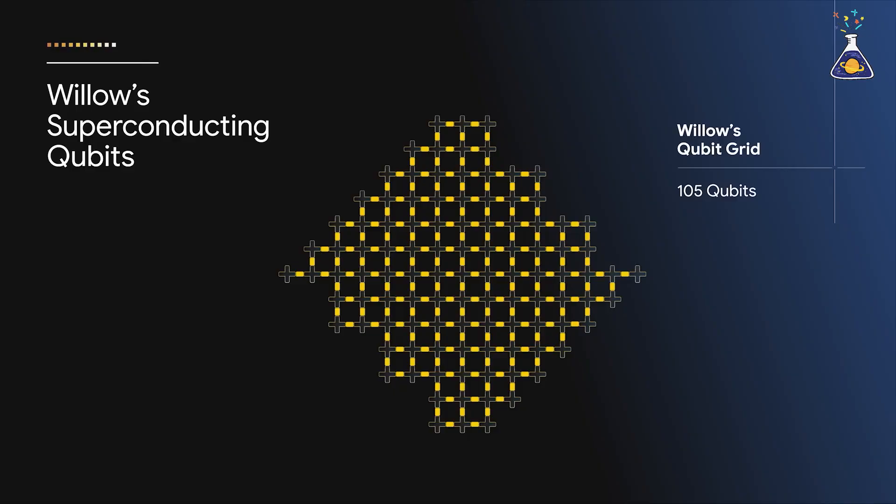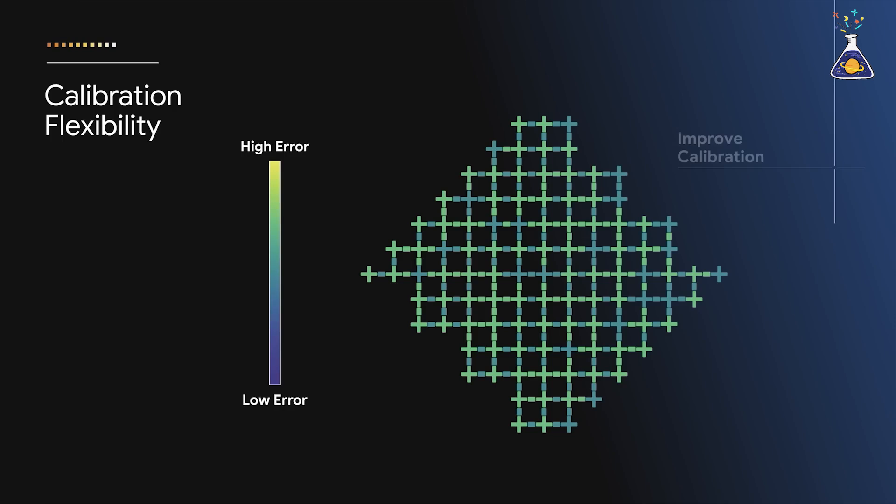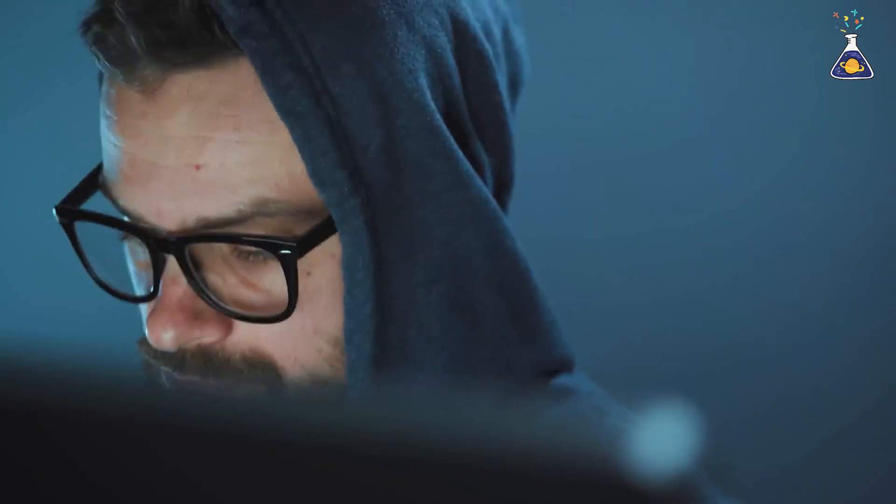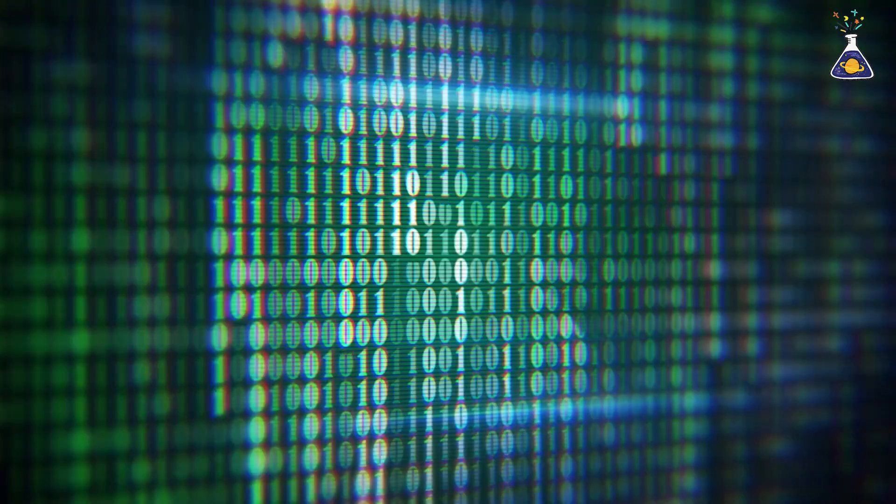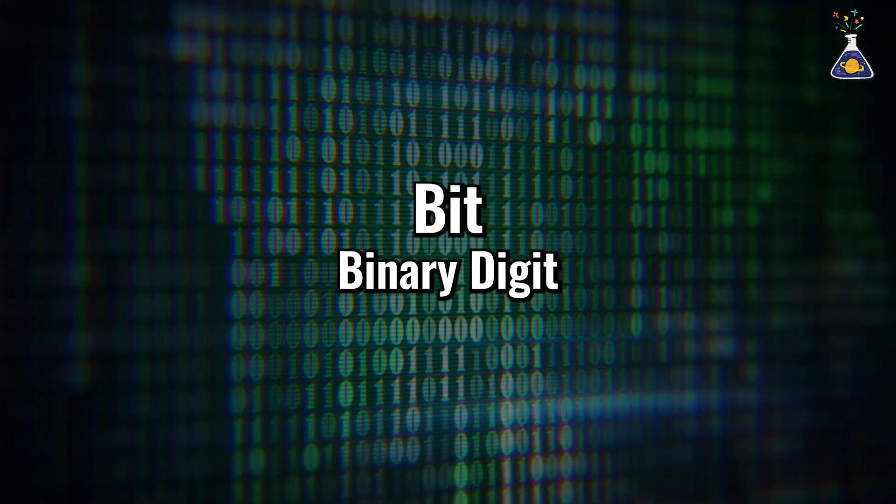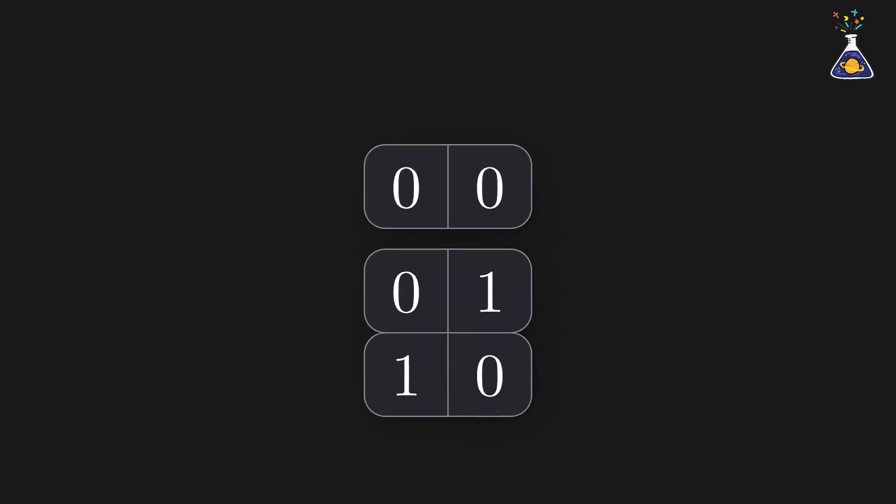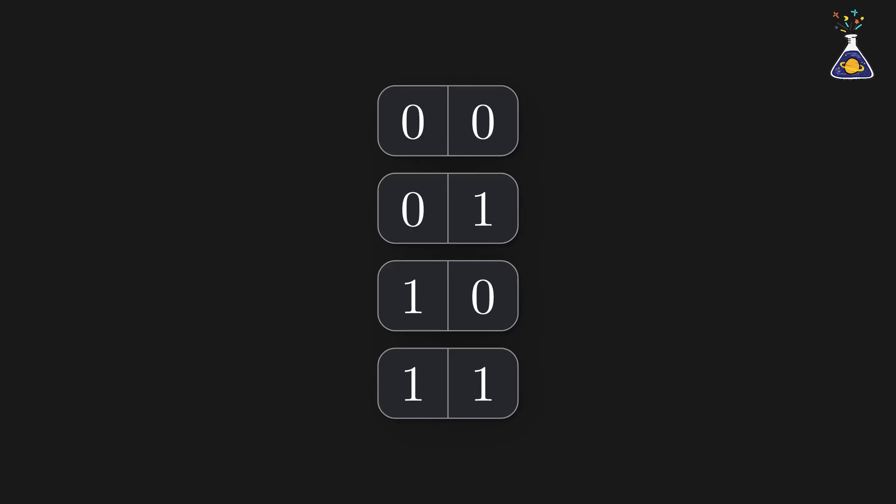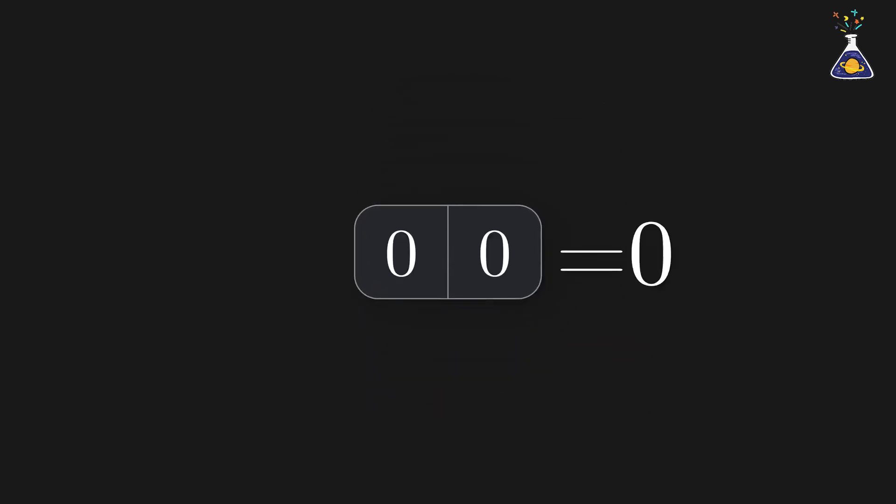To understand this, we first need to know how quantum computers operate differently from traditional computers. All computers we typically use process information using bits, the smallest units represented by 0 or 1. One bit can represent 0 or 1, while two bits can represent combinations such as 00, 01, 10, or 11. By combining bits, computers store and process various types of information.